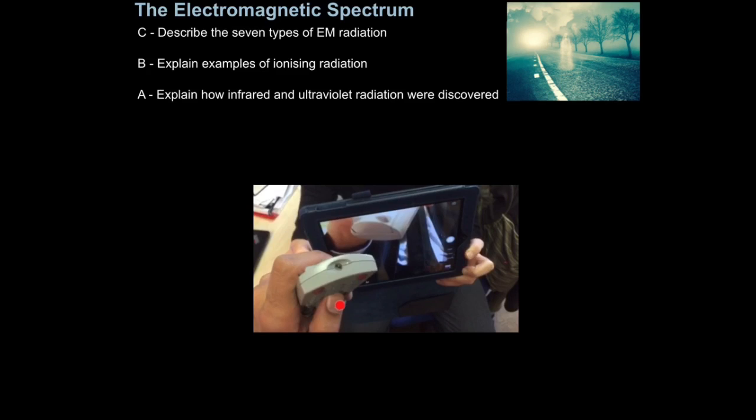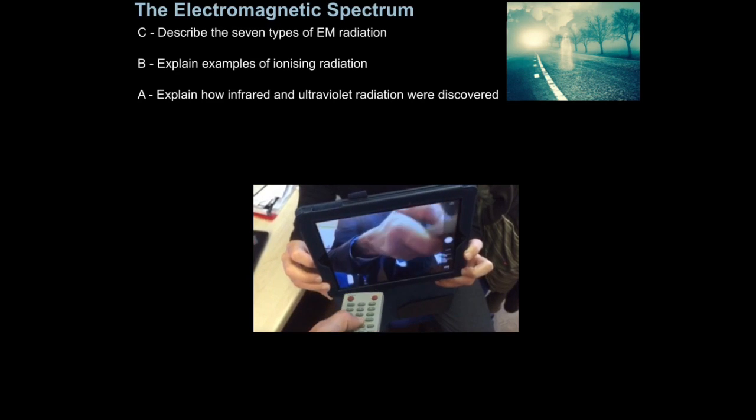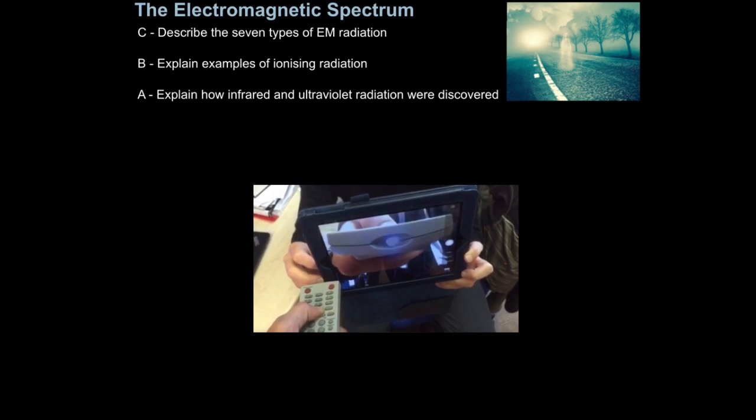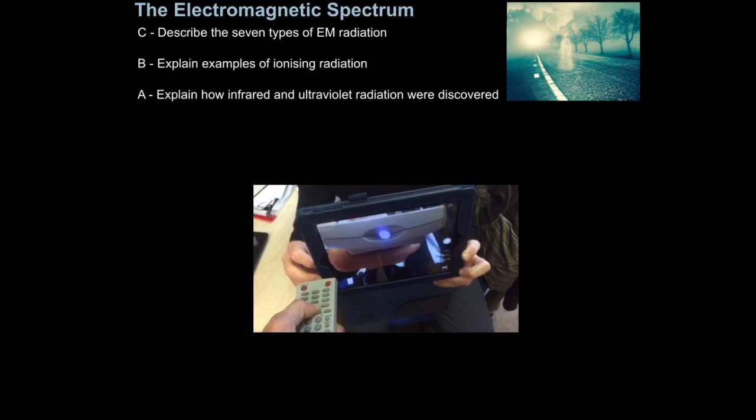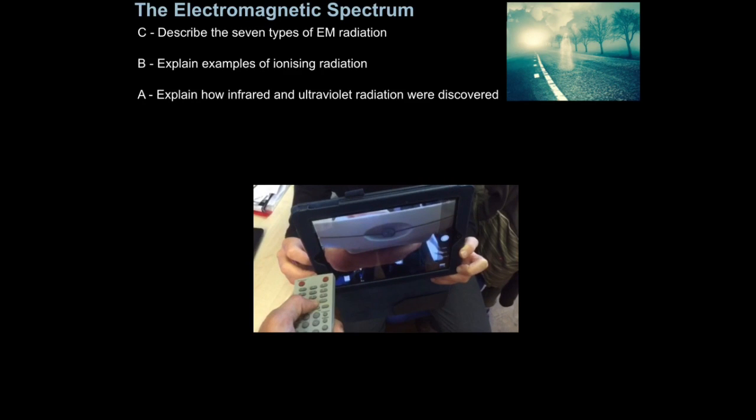Check out this video. So here I've got a remote control, and pressing the button down, you're seeing nothing. But then, when I hold it to camera and press the button, you can see a light flashing. This just shows us one of the limitations of our own eyes. Our eyes alone cannot detect the light which is emitted from that remote control. But if you look at it through a digital camera, digital cameras can detect that light.